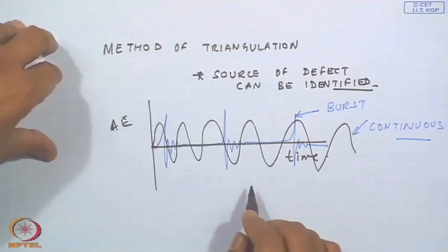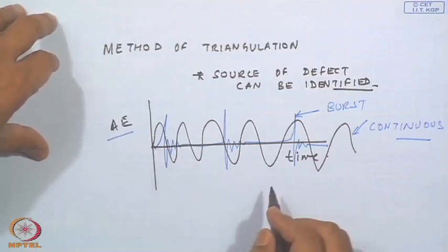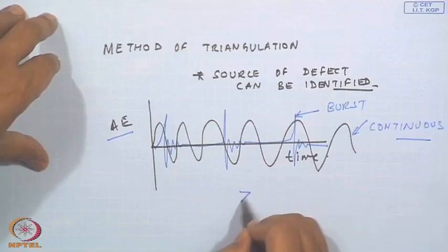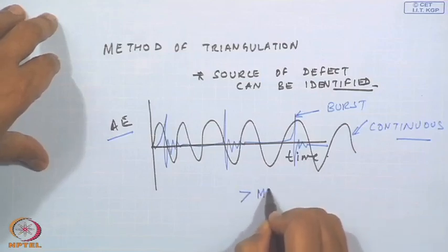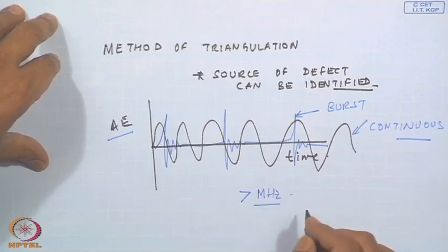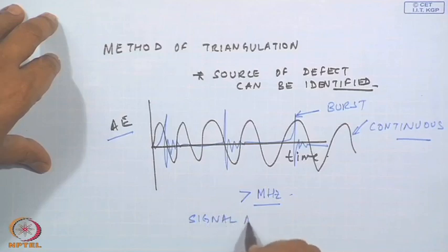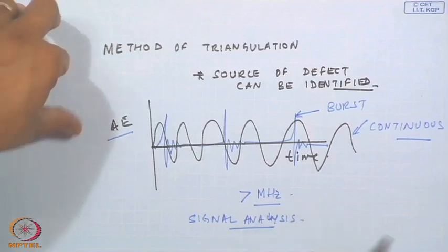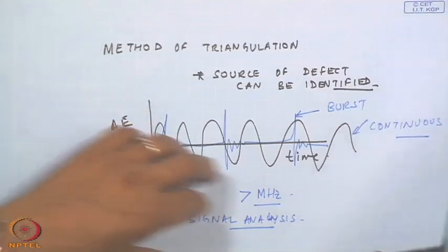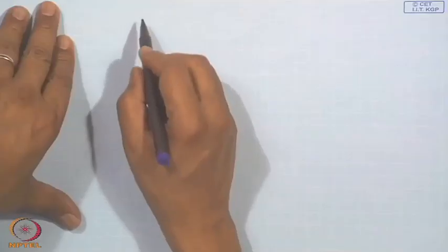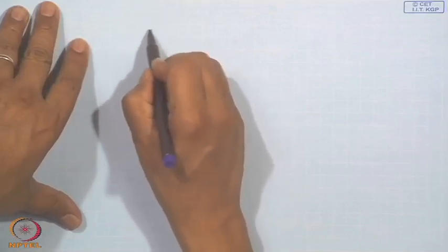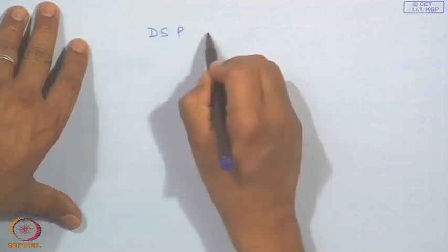There is a little historical development in acoustic emission systems. Because these signals are of the order of a few megahertz, to do any signal analysis — recalling the class on computer-aided data acquisition — to do DSP on such a high-frequency signal, we always have to process it digitally.